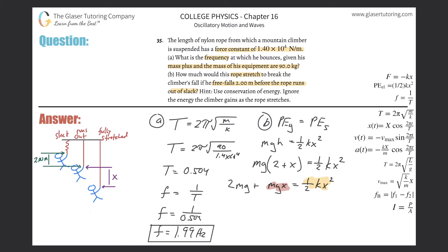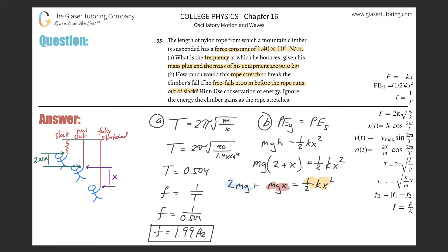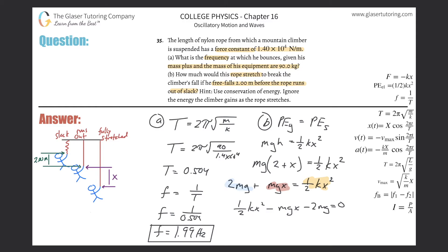Organizing this as a quadratic set equal to zero by moving terms to the left side: one half kx squared minus mgx minus 2mg equals zero. The k value is the force constant: 1.4 times 10 to the 4th. The mass is 90 kilograms, and g is 9.8.